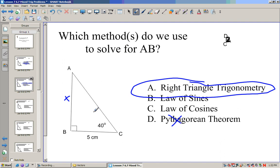What that means, if I want to solve for this side, I would say this is opposite, this is adjacent. So the tangent of 40 is equal to x over 5. Multiply 5 by both sides, so 5 tangent of 40 is equal to x.